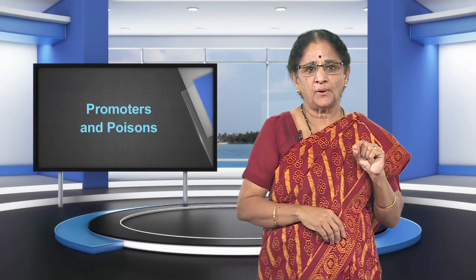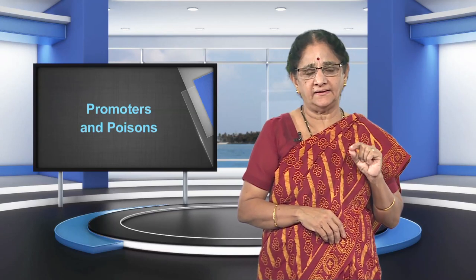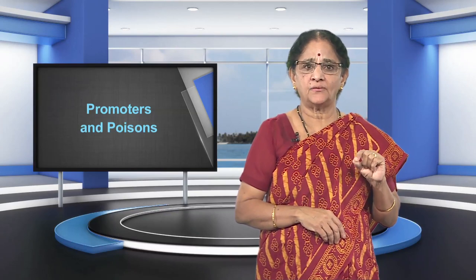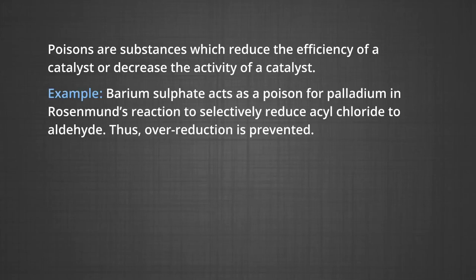The action of a promoter may be due to the formation of a compound between it and the catalyst, which may help to enhance the adsorption of substrate on the catalyst. Poisons are substances which reduce the efficiency of a catalyst or decrease the activity of a catalyst. For example, barium sulphate acts as a poison for palladium in Rosenmund's reaction to selectively reduce acyl chloride to aldehyde. Thus, over-reduction is prevented.